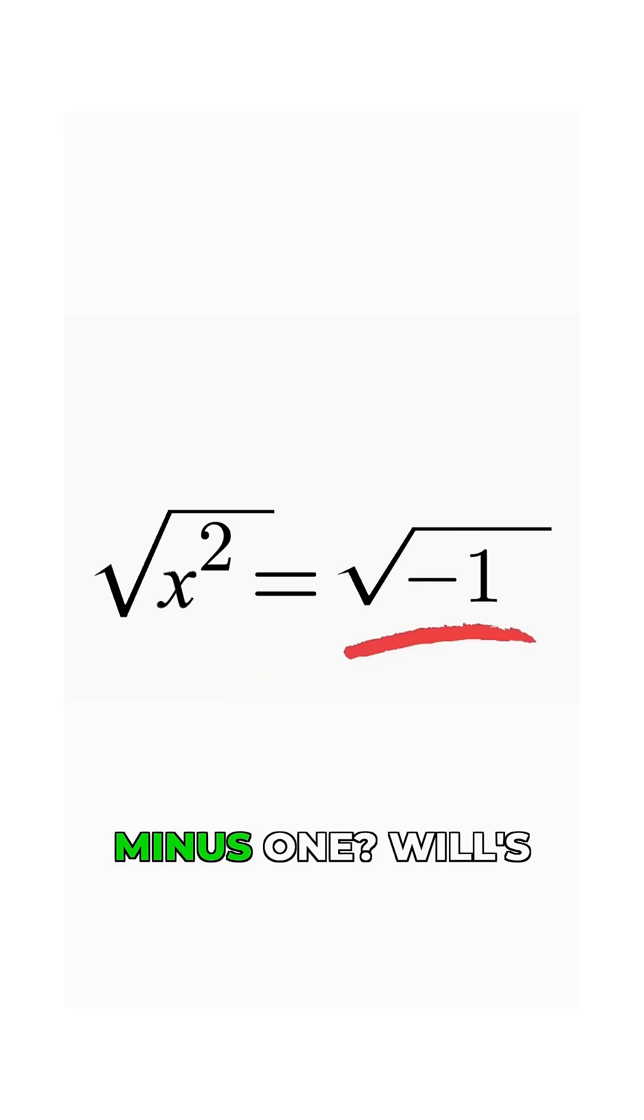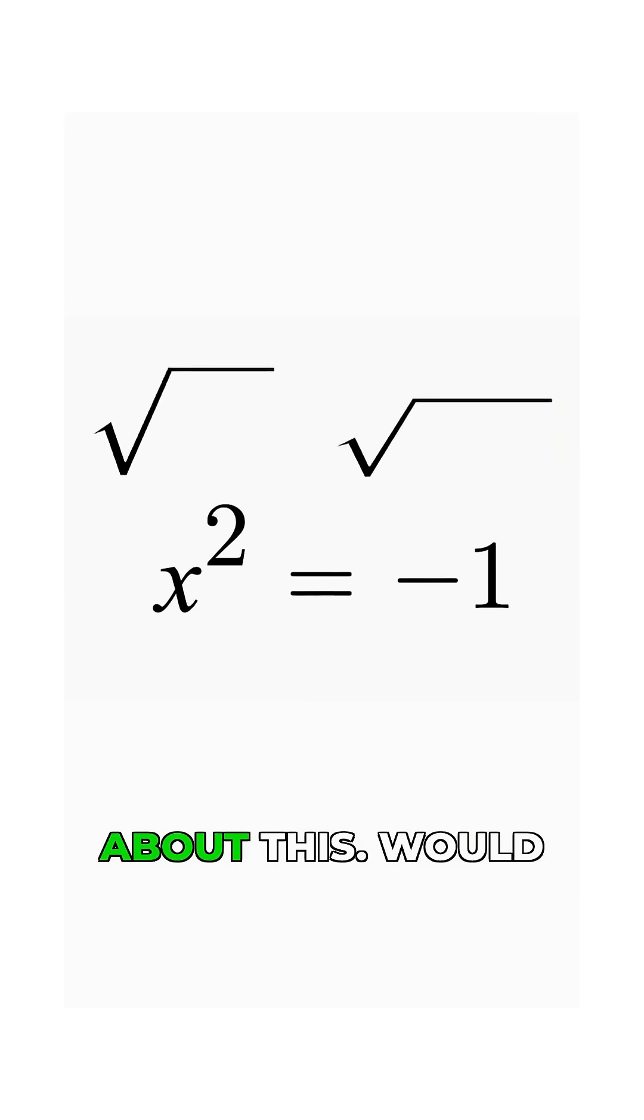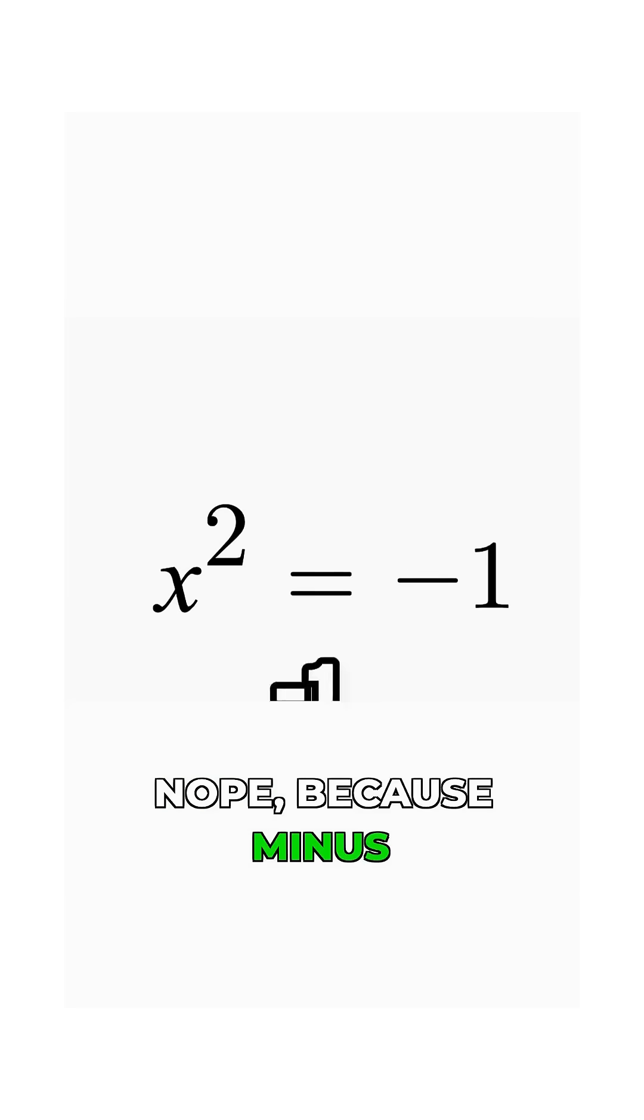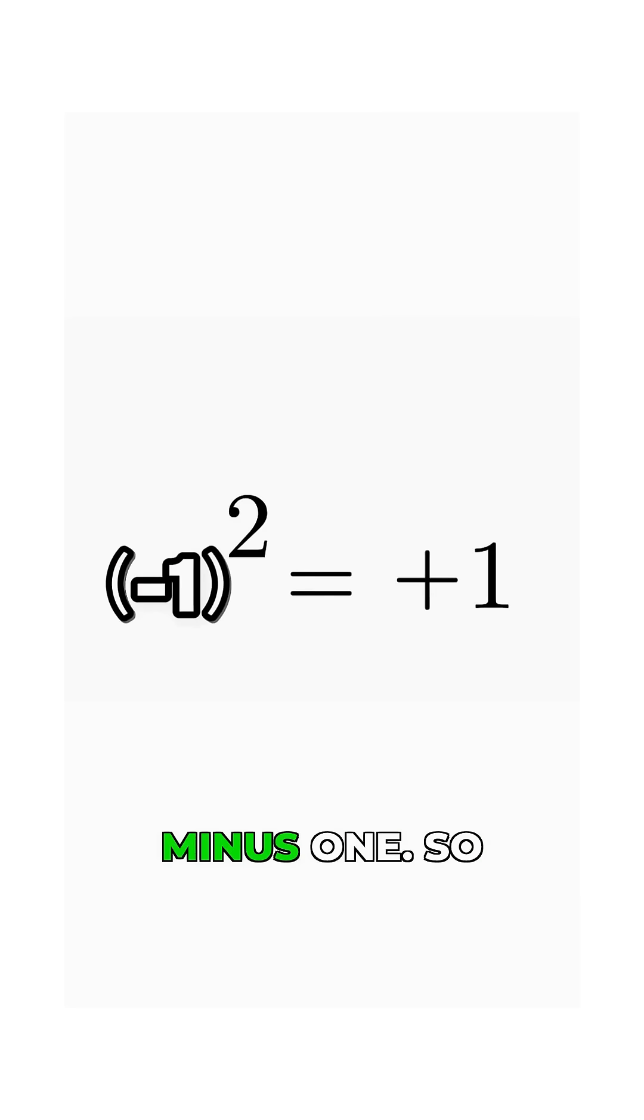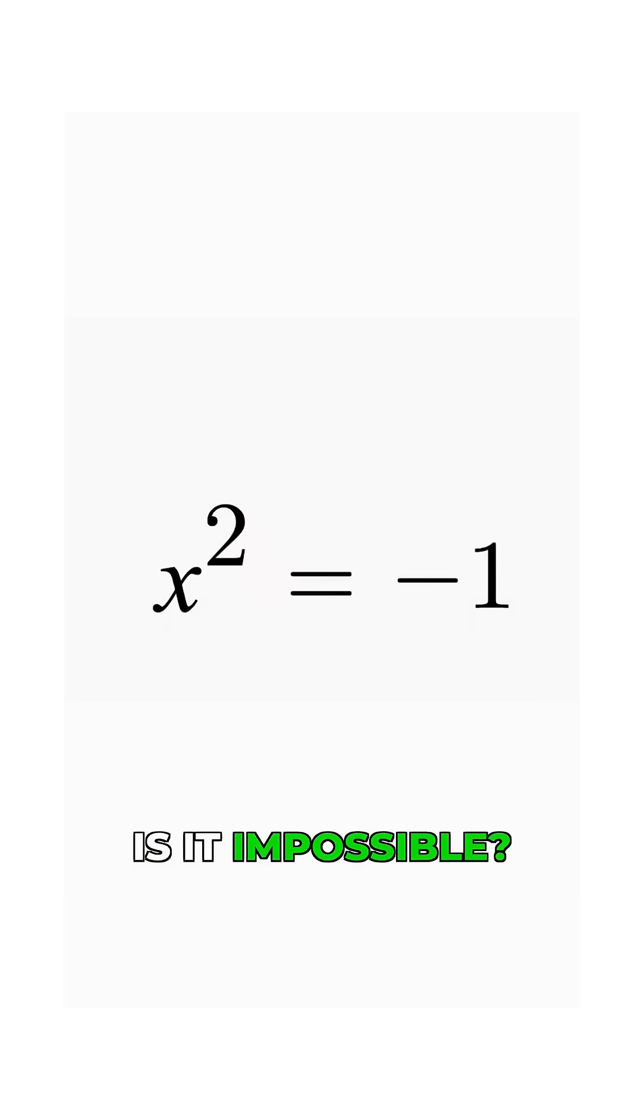How are you going to square root minus 1? Will's right. Think hard about this. Would x just be minus 1? Nope, because minus 1 squared is plus 1, not minus 1. So is it impossible?